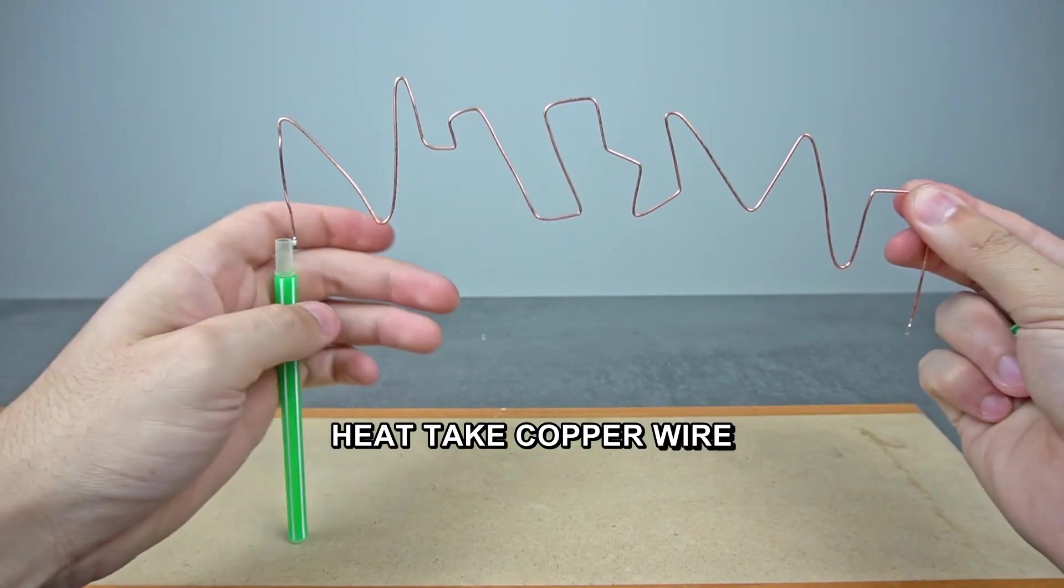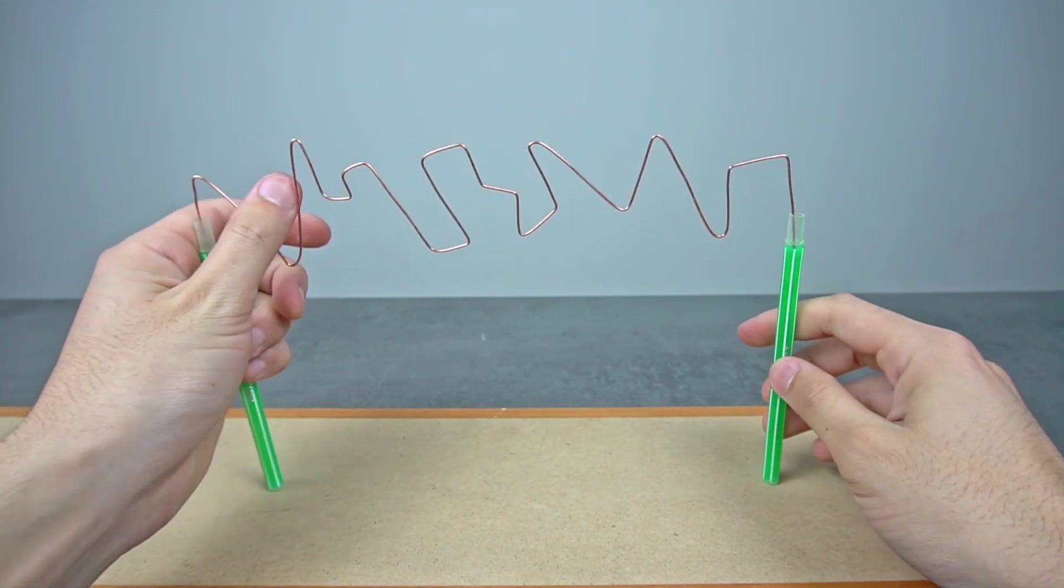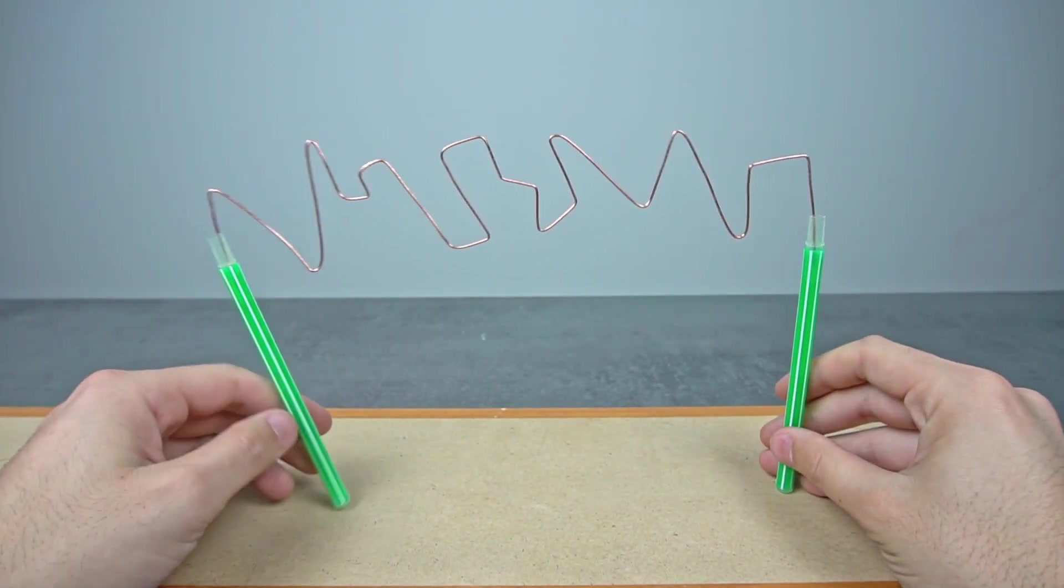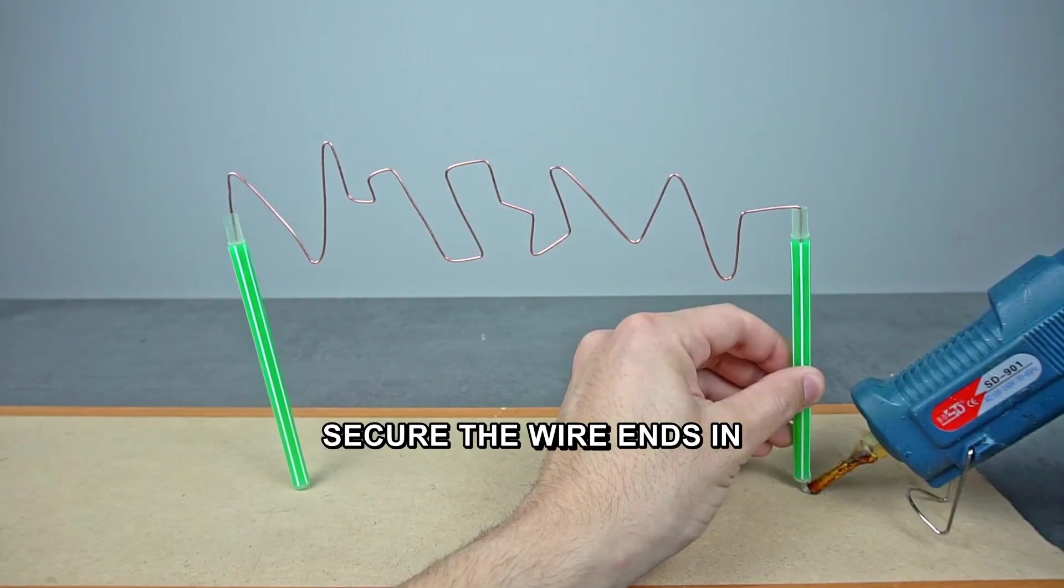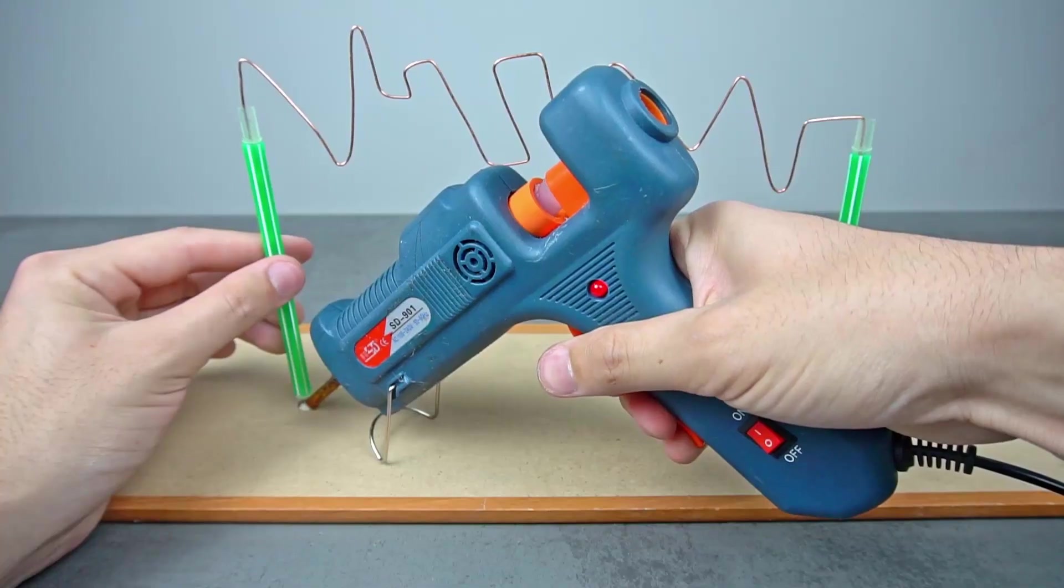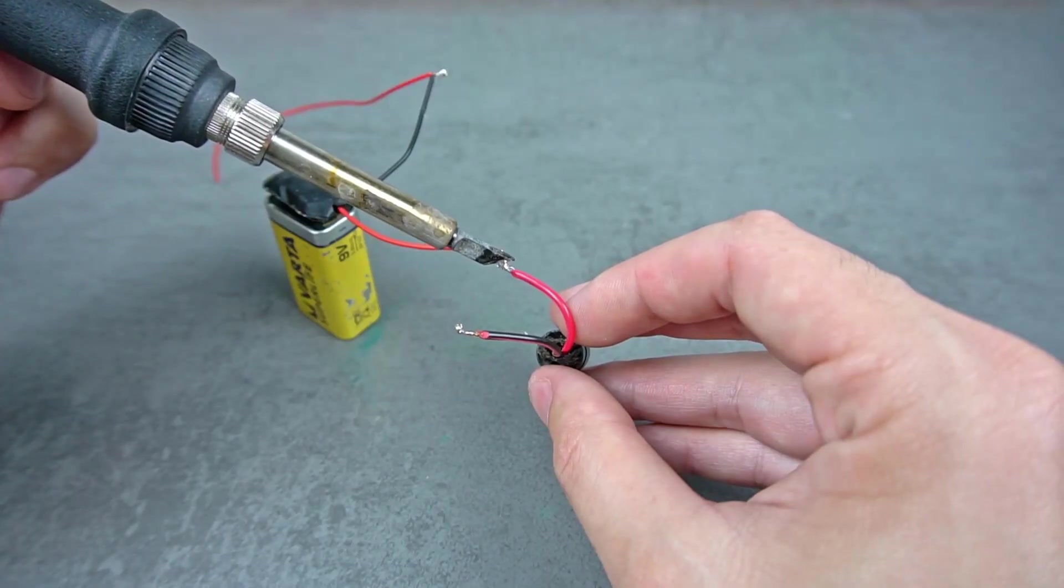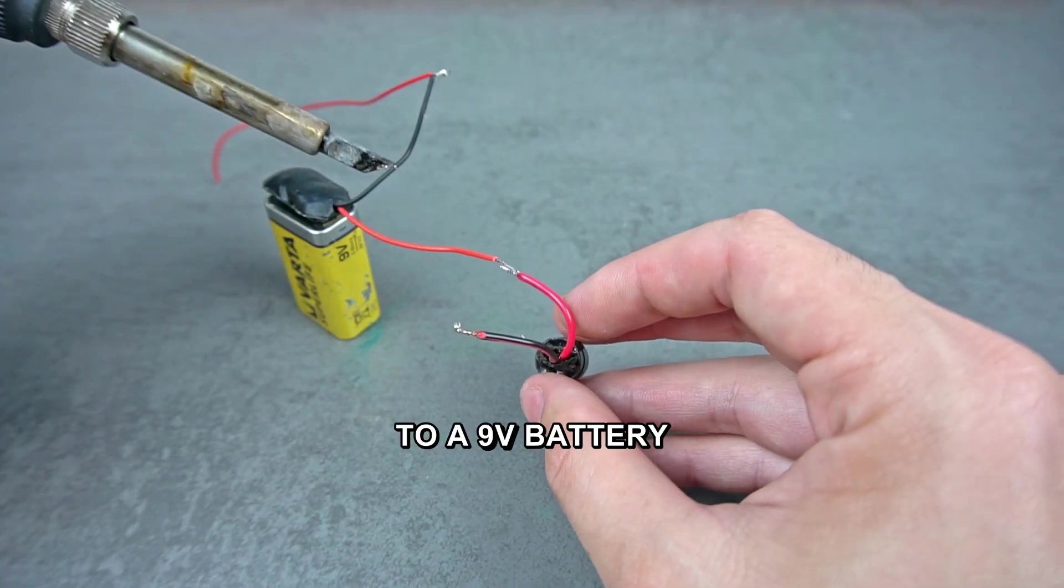Take copper wire and bend it in a random pattern. Secure the wire ends in pen cases and glue them to a wooden board. Solder a buzzer and connect it to a 9 volt battery.